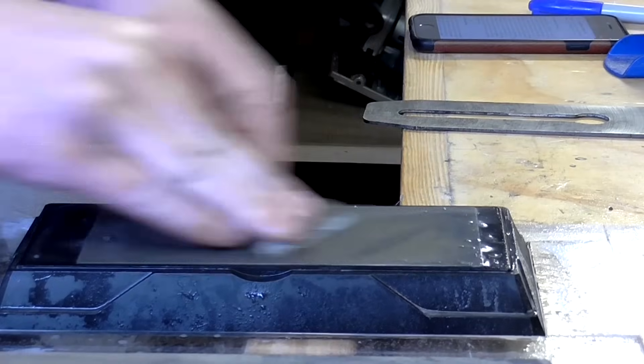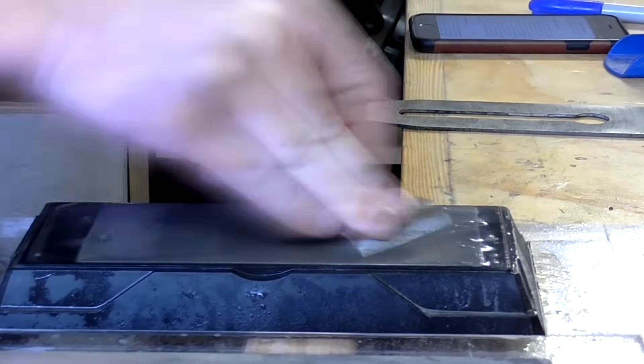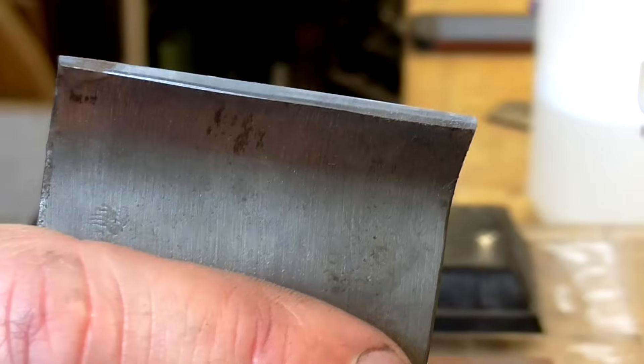You can also flatten the tip of the cap iron to make sure it makes good contact with the cutting iron which will help prevent chips from getting caught in there.